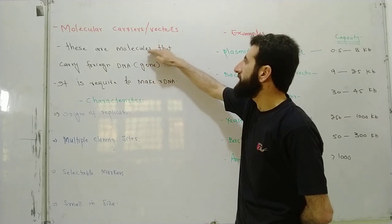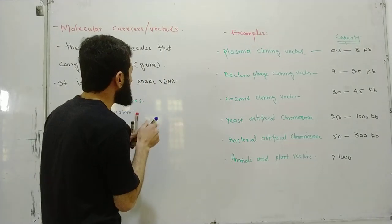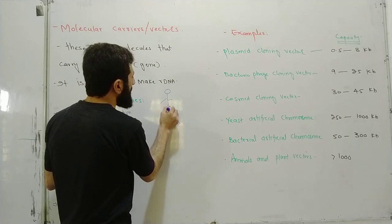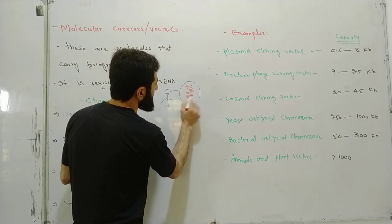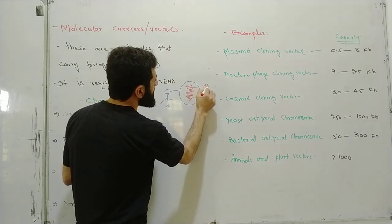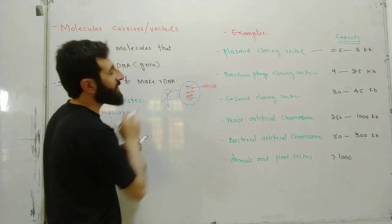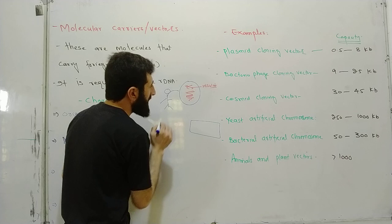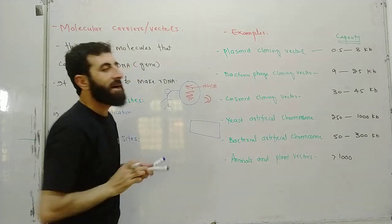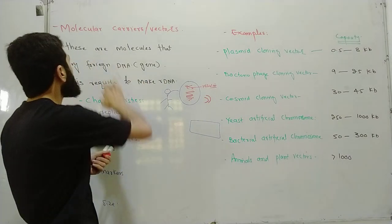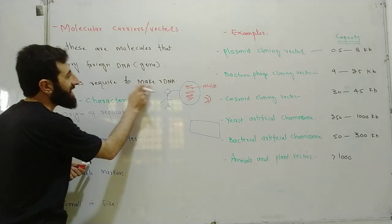Molecular vectors are molecules that carry foreign DNA. For example, consider a human body cell containing DNA with a desired gene — for example, insulin. The insulin gene is cut using restriction nucleases. This gene is then inserted into a bacterial cell. The bacterial cell acts as a carrier, a vector, to make recombinant DNA.